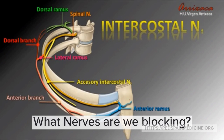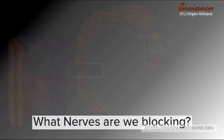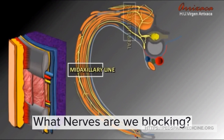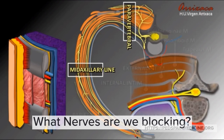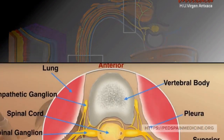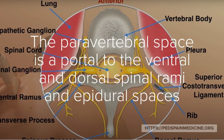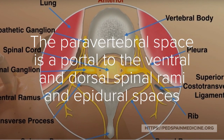So what nerves are we blocking? We are blocking the intercostal nerves as they exit the spinal cord. The paravertebral nerve block is a more proximal and deeper version of the intercostal nerve block. The paravertebral space is a portal to the ventral and dorsal spinal rami and the epidural spaces.